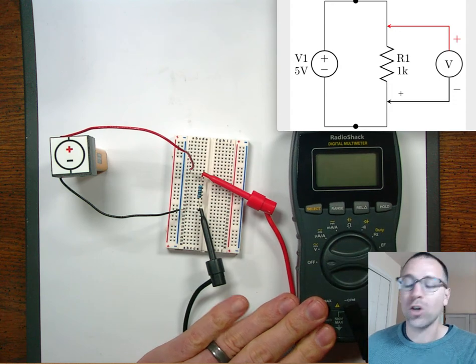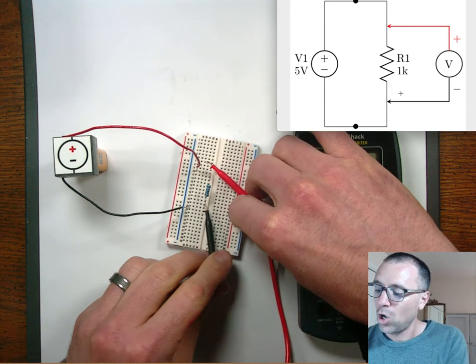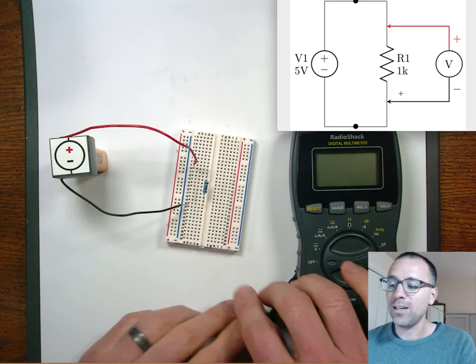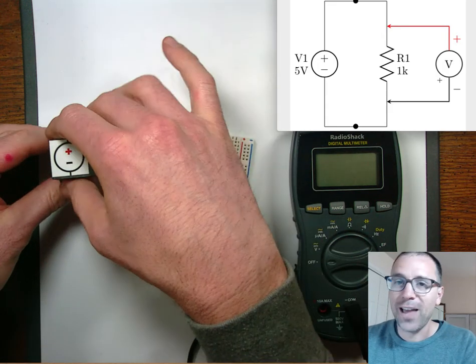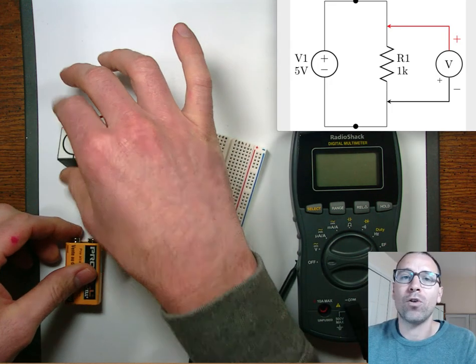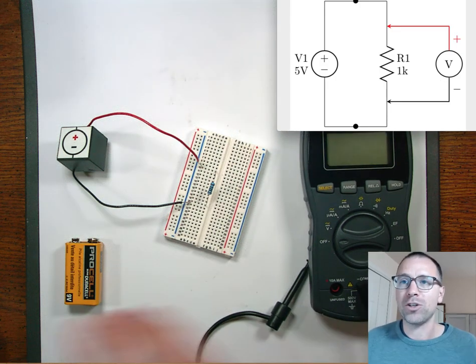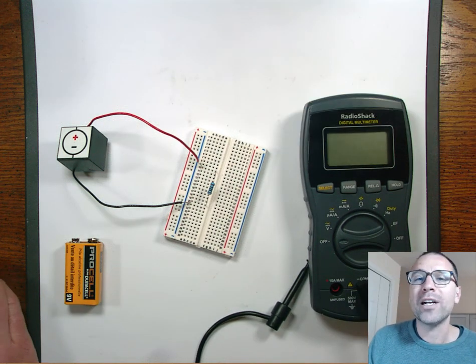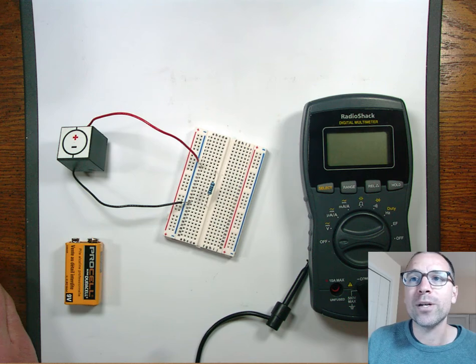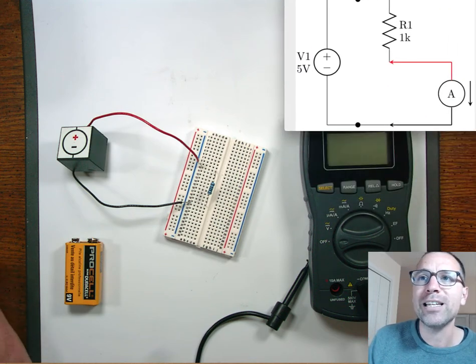First thing that we do is we turn off our multimeter. We disconnect the leads. I would always suggest to get in the habit of depowering the circuit before you actually want to collect this measurement. The next thing that we're going to do is we're going to set up the multimeter in series. And let me show you what I mean by in series.